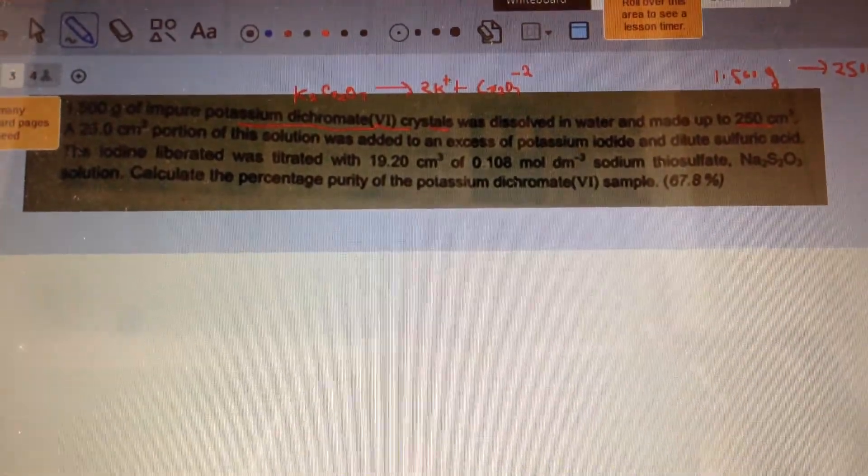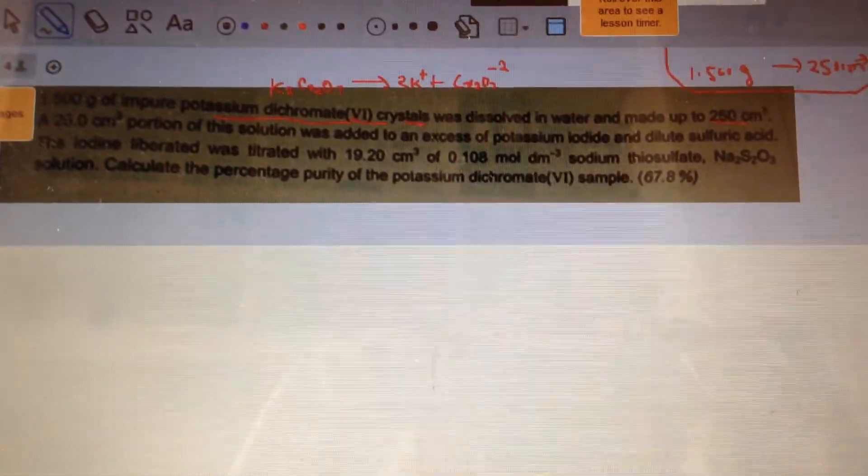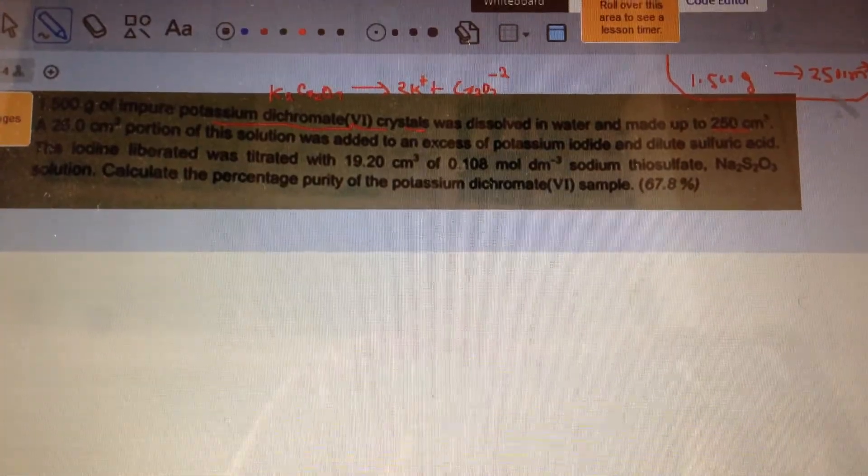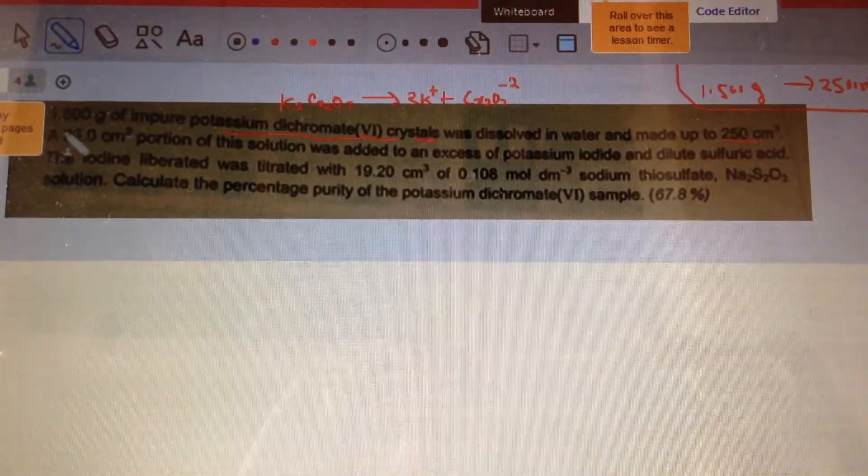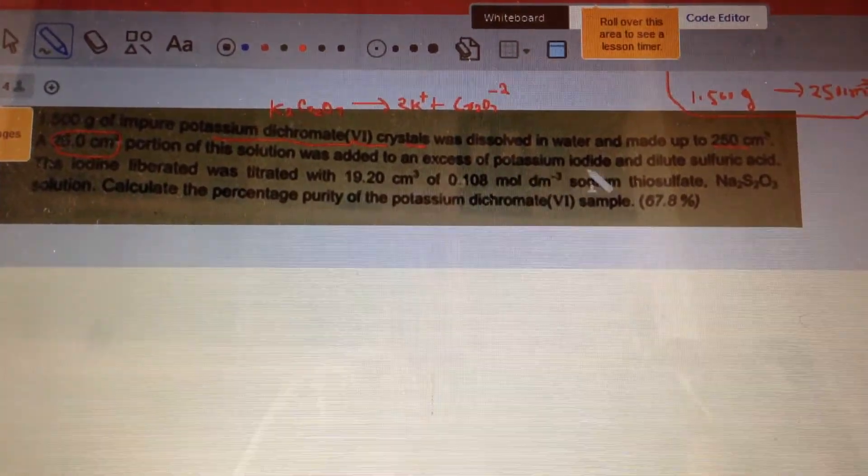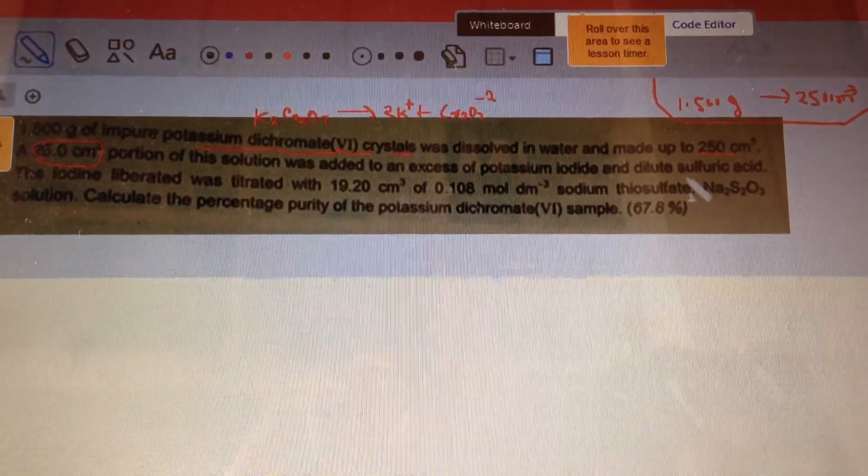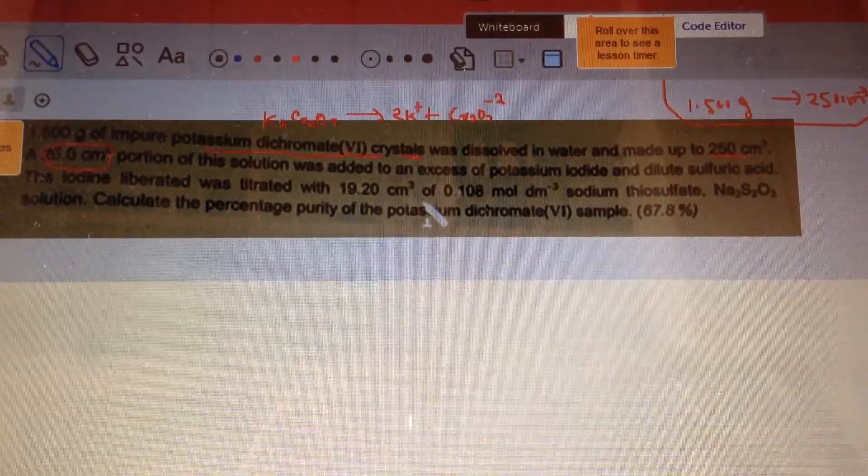And then once it was dissolved, they took 25 centimeter portion of that solution, and it was added to potassium iodide and dilute sulfuric acid. So it's a very similar reaction to what we just did in the previous case.